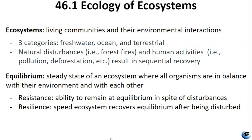Living in an ecosystem means competition for resources. It's a constant struggle within and between species for things like organic material, sunlight, and nutrients. The way that communities work is influenced by factors like location, rainfall, topography, and species diversity. Ecosystems can be grouped into three main categories: freshwater, ocean, and terrestrial.